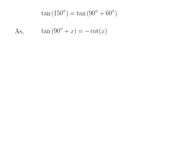As we know, the trigonometry identity tangent of 90 degree plus x is equal to minus cotangent of x.